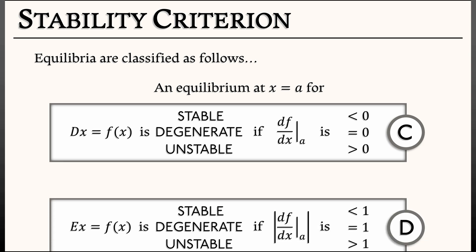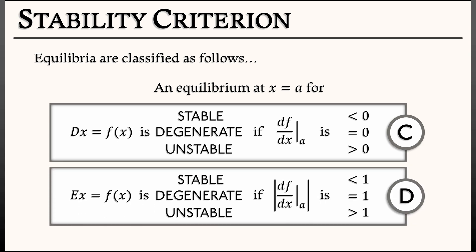The discrete time stability criterion is very similar. If you have an equilibrium to ex equals f of x, then it is either stable or degenerate or unstable, depending on whether the derivative of the right-hand side at the equilibrium is less than 1, or equal to 1, or greater than 1, respectively.